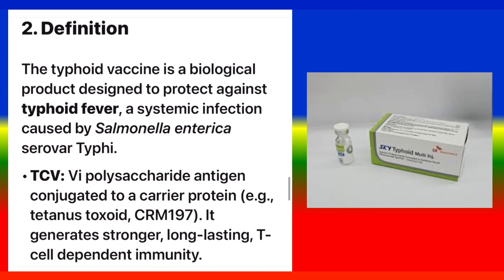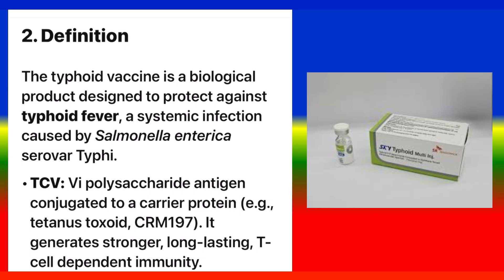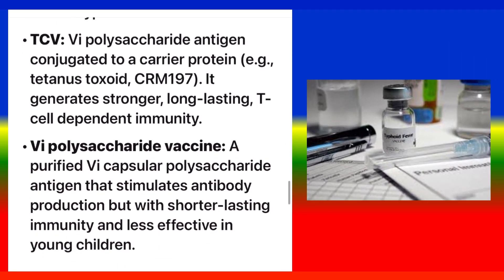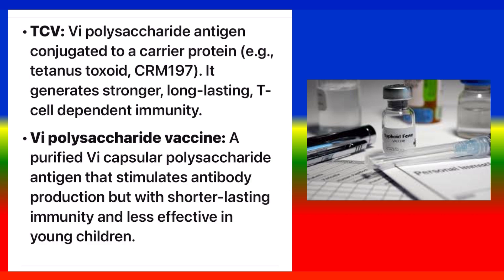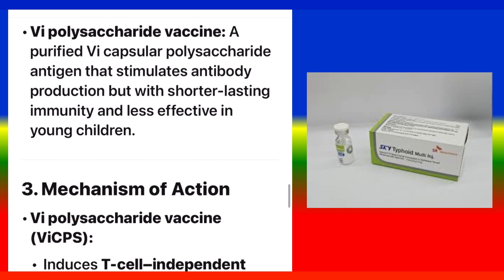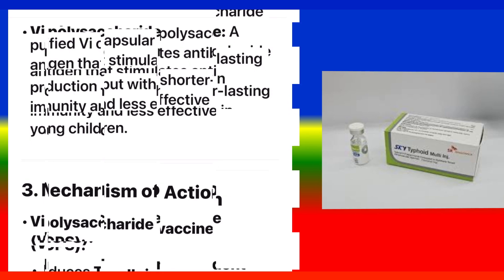Definition: The typhoid vaccine is a biological product designed to protect against typhoid fever, a systemic infection caused by Salmonella enterica serovar Typhi. TCV consists of Vi polysaccharide antigen conjugated to a carrier protein (e.g., Tetanus Toxoid or CRM197), generating stronger, long-lasting T-cell-dependent immunity. The Vipolysaccharide vaccine is a purified Vi-capsular polysaccharide antigen that stimulates antibody production but with shorter-lasting immunity and less effectiveness in young children.